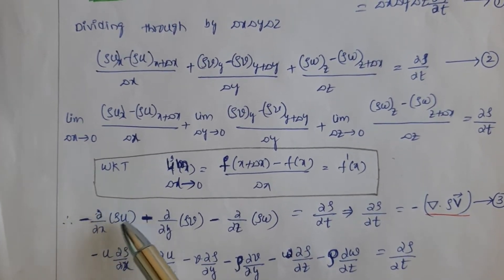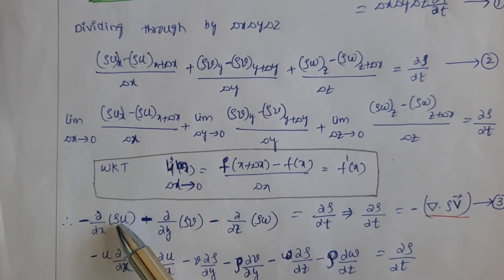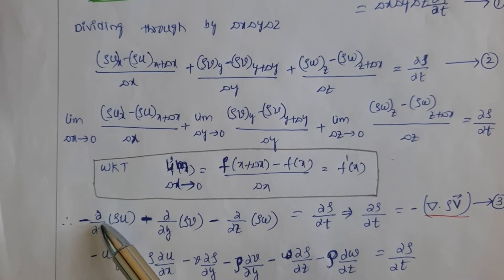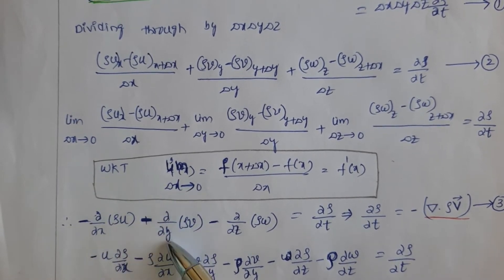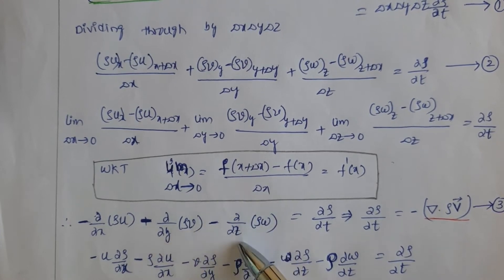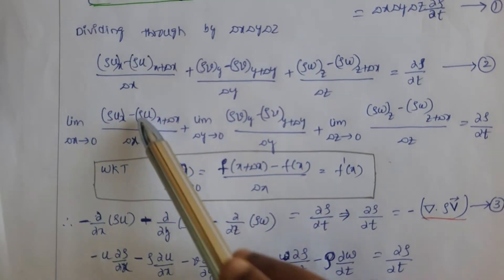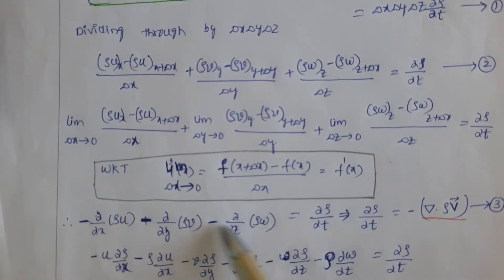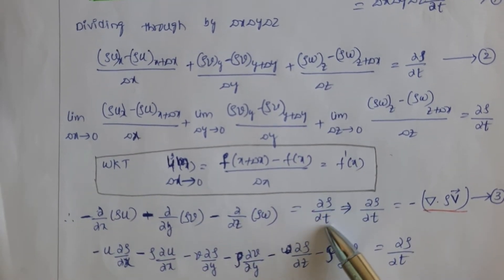Since there are two independent variables, we apply partial derivatives. This gives: minus (∂/∂x)(rho·u) minus (∂/∂y)(rho·v) minus (∂/∂z)(rho·w) equals ∂(rho)/∂t. Since it is in reverse form, we get the minus sign. This same expression can be rewritten as ∂(rho)/∂t equal to minus this complete term.